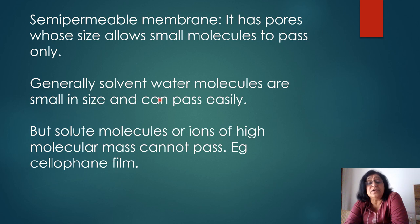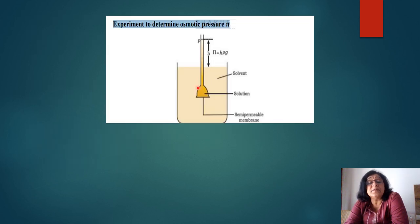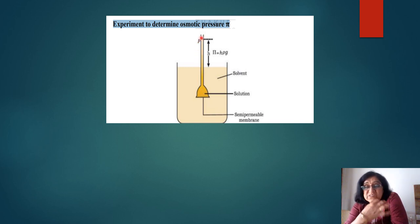Solvent water molecules are small in size and pass easily; solute molecules are large and cannot pass. Examples of semi-permeable membranes include cellophane membrane and animal bladder. In the experiment, the semi-permeable membrane separates solvent outside and solution inside a thistle funnel. Solvent flows into the solution and the level rises. The pressure required to stop this flow is given by h·ρ·g, where h is the height of the solution column, ρ is density, and g is gravitational acceleration.